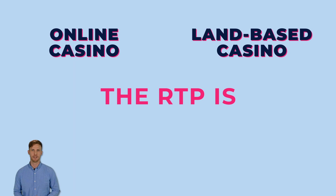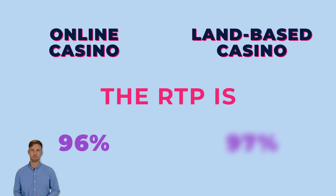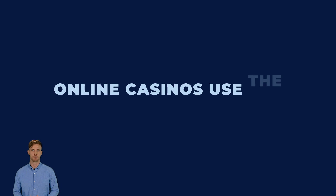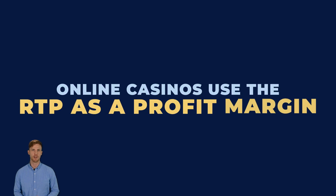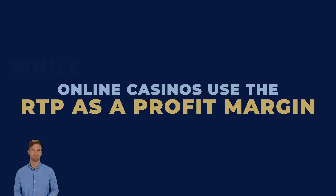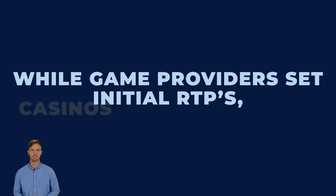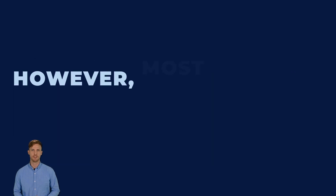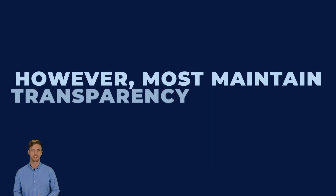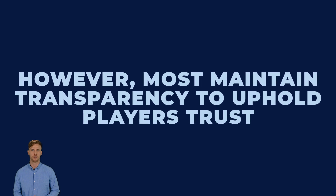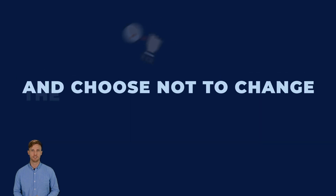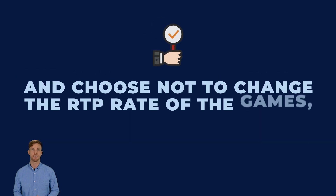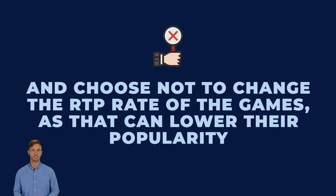Online casinos are transparent about their RTP, but it's often concealed in land-based establishments. Online casinos use the RTP rate as a profit margin. While game providers set initial RTPs, casinos can adjust them. However, most maintain transparency to uphold player trust and choose not to change the RTP rate, as it can lower their popularity.